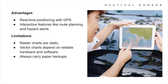Electronic charts offer several advantages — they provide real-time positioning when linked with GPS and allow for interactive features like route planning and hazard alerts. However, they have limitations. Raster charts are static and cannot be simplified for specific needs. Vector charts rely on reliable hardware and software, which can fail or malfunction. Always carry paper charts as a backup and ensure they're up to date.